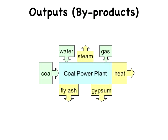Now every industrial plant has outputs — what we call byproducts or waste. In this case we have a coal power plant that has fly ash, gypsum, steam, and waste heat.